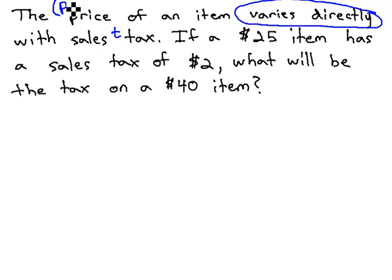Let's use P for the price and t for the tax. Directly means we take price and divide by the tax, and that will always equal the same value, our constant of variation.